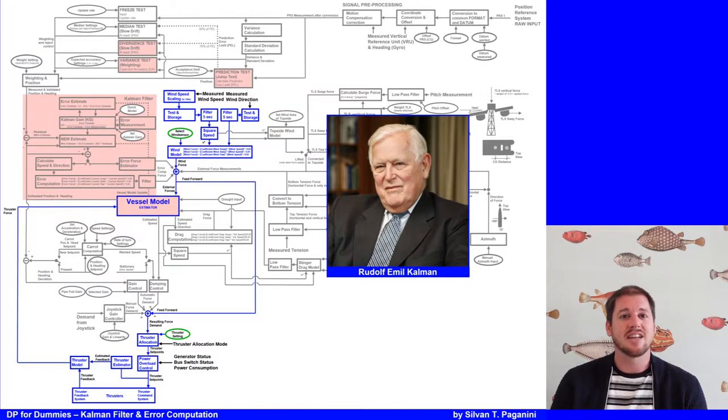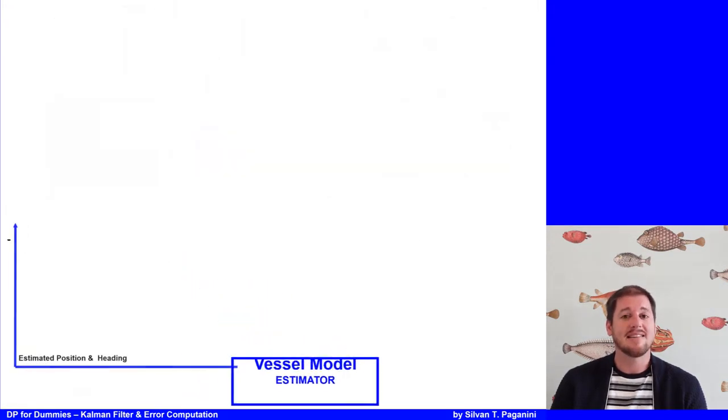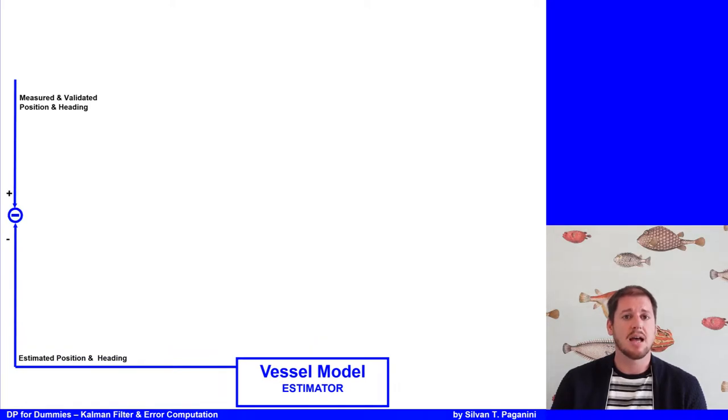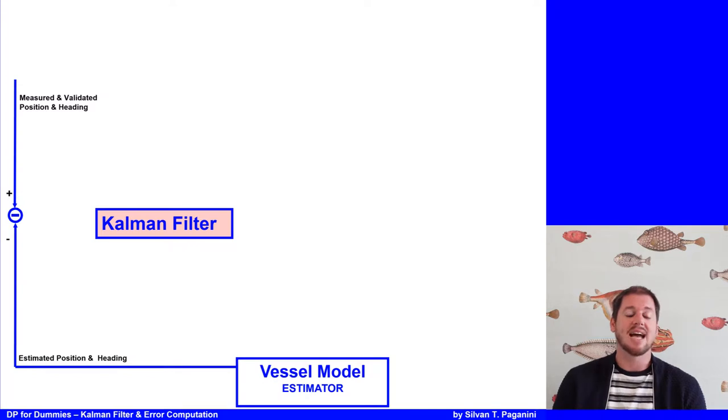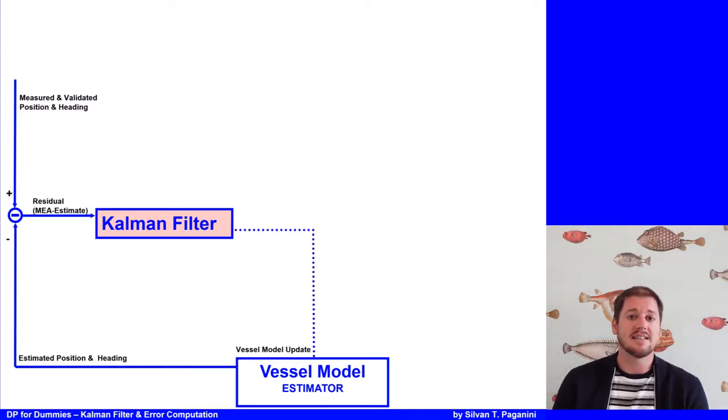Normally, the difference between the estimated position and the measured position are put through a Kalman filter, same for the heading, and the vessel model is updated and the error force calculated. But in these days, the dynamic positioning operator is allowed by some DP manufacturers to change settings in the Kalman filter, and therefore we have to go a little deeper into this matter.